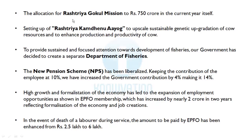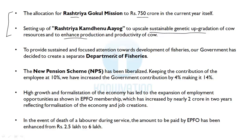The allocation for Rashtriya Gokul Mission, which is related to cow resources and Animal Husbandry, will be Rs. 750 crores in the current year itself. It aims to upscale sustainable genetic upgradation of cow resources and enhance production and productivity. There is also an announcement for fisheries — the government has decided to create a separate Department of Fisheries to provide sustained and focused attention to its development.